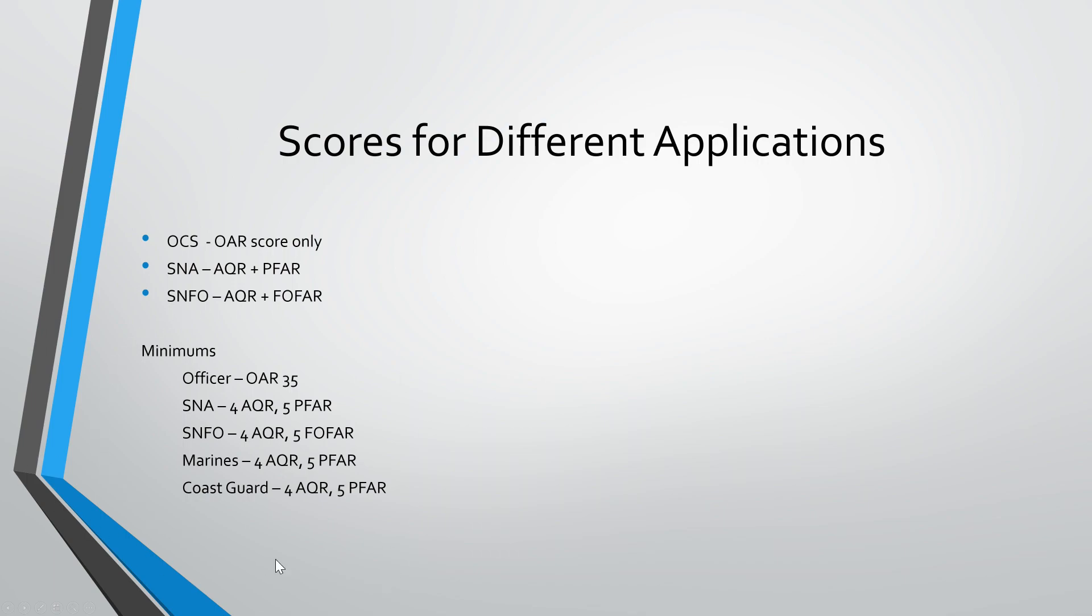Your OCS score, you just need the OAR and then your Naval Aviator AQR plus your PFR and then your flight officer side of things, you need the AQR and the FOFAR. These on the bottom left are your minimums for each of the testings. If you want to be a Naval Aviator, you need a four on the AQR and a five on the PFR. If you want to be a flight officer, you need a four on the AQR and a five on the FOFAR and then Marines and Coast Guard. Those are your scores there.